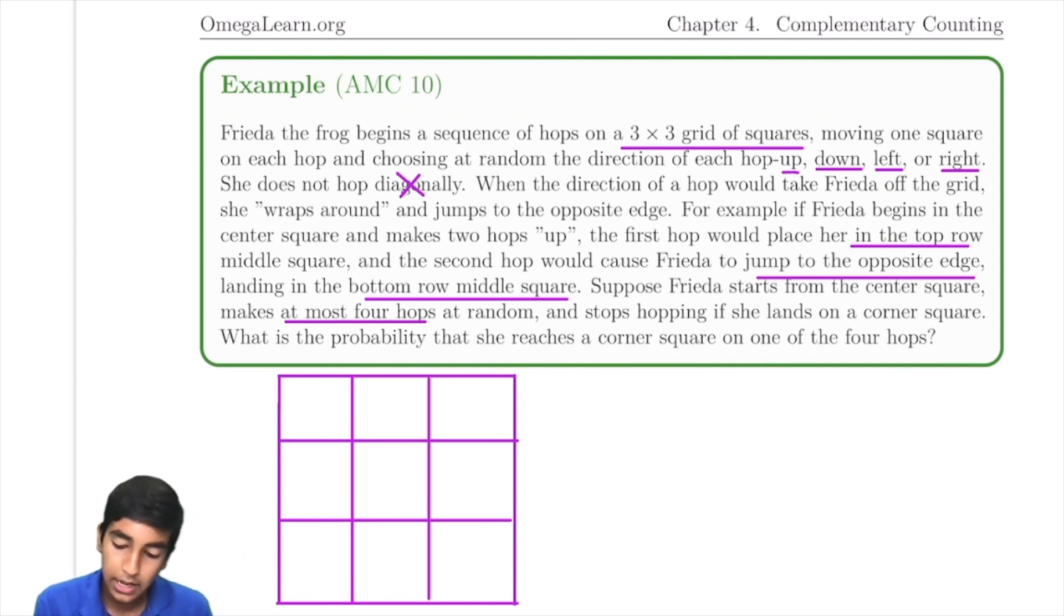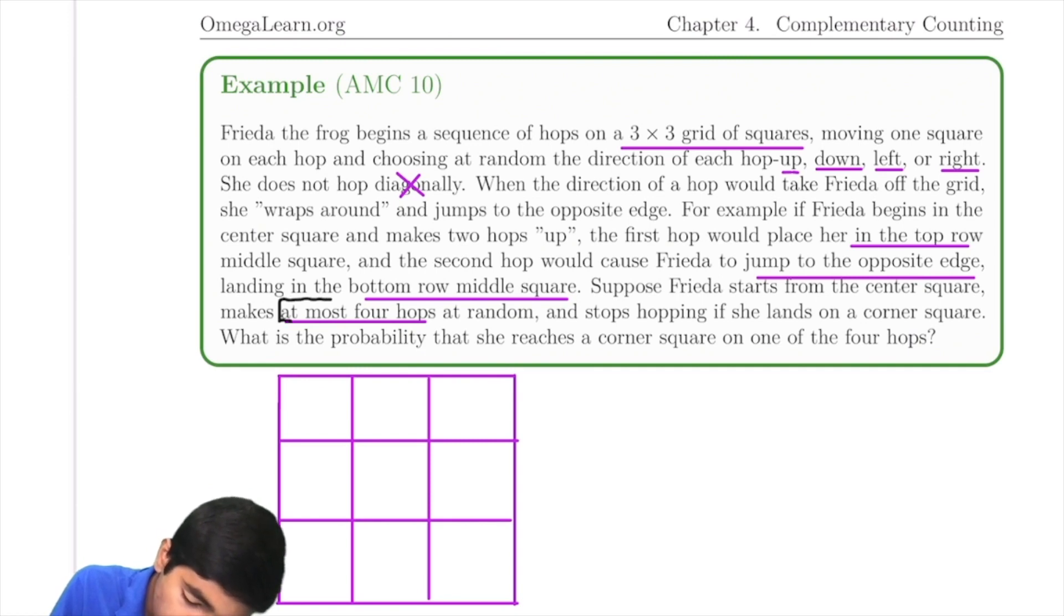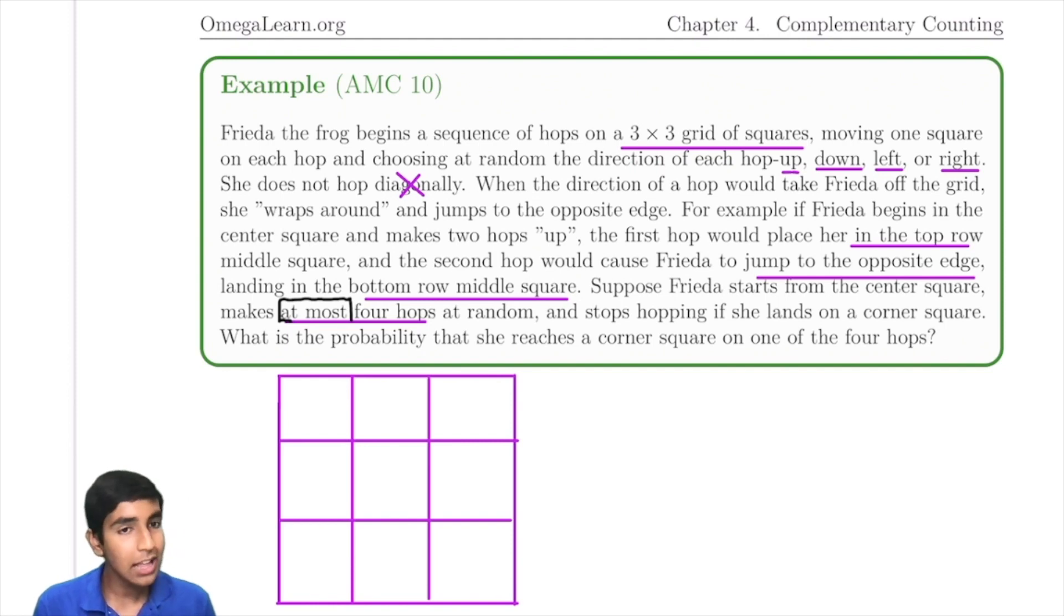And stops hopping if she lands on a corner square. What's the probability that she reaches a corner square on one of the four hops? So the key thing to note here is that she has to land on a corner square in at most four moves. That means Frida can land on a corner square in one, two, three, or four moves. Counting all of that would take a lot of casework. So instead, can we use complementary counting?